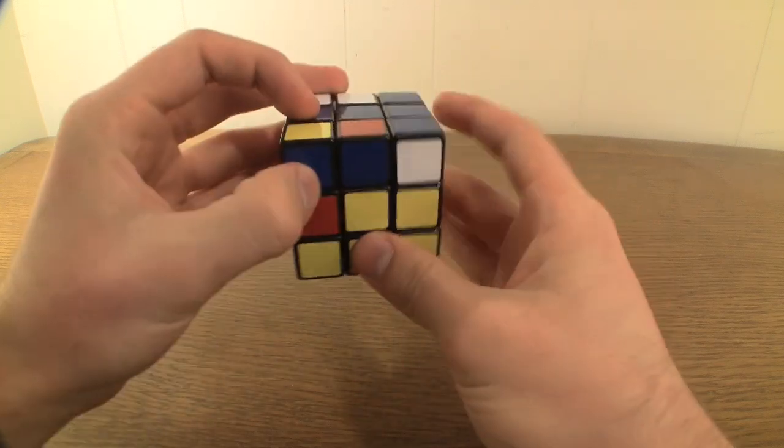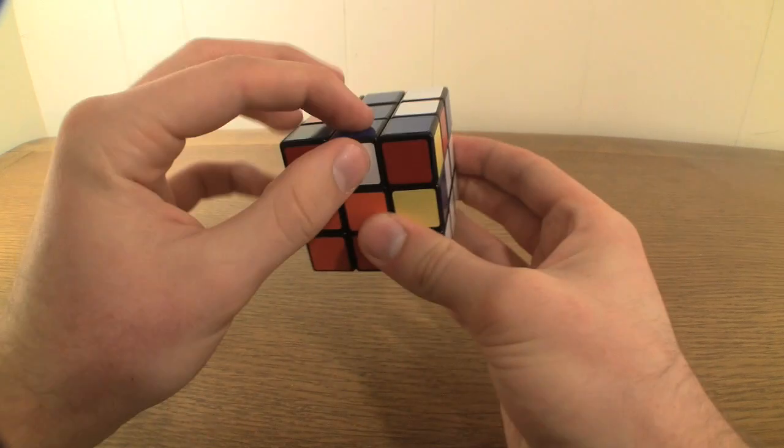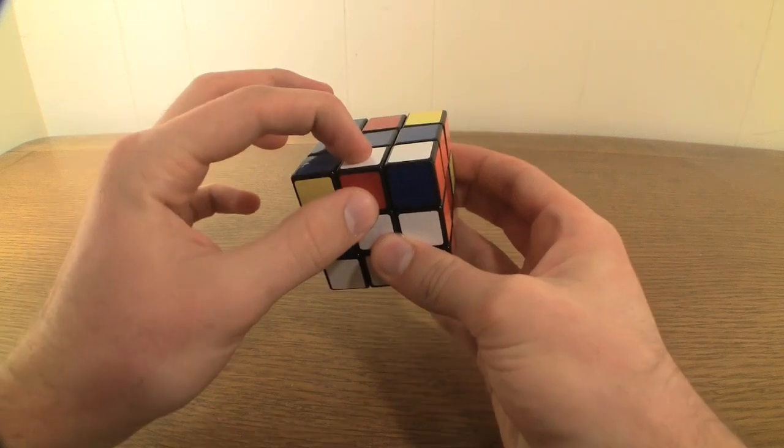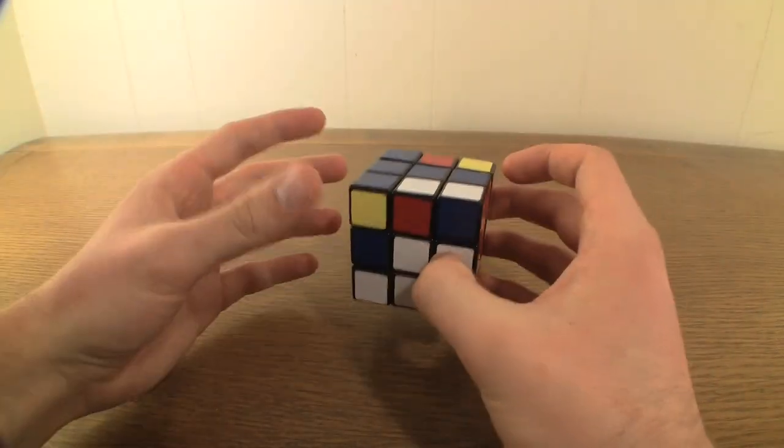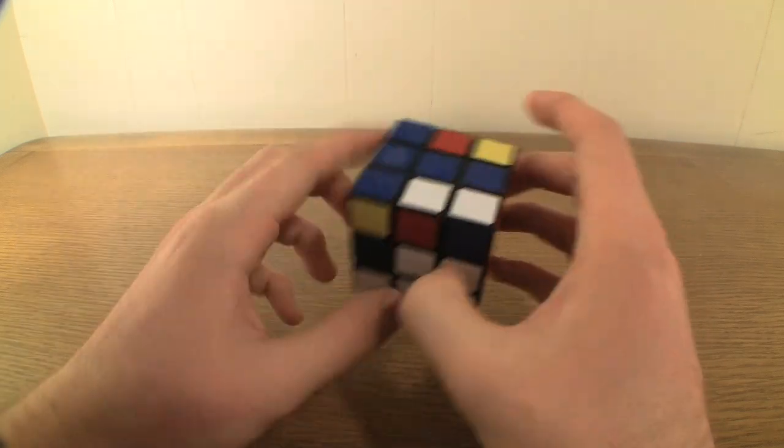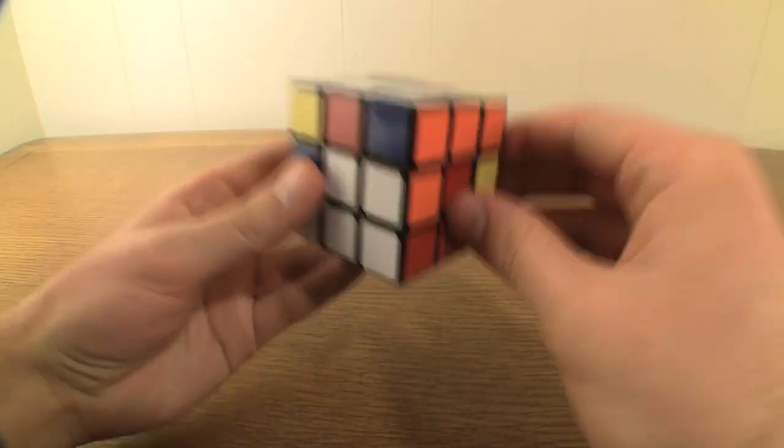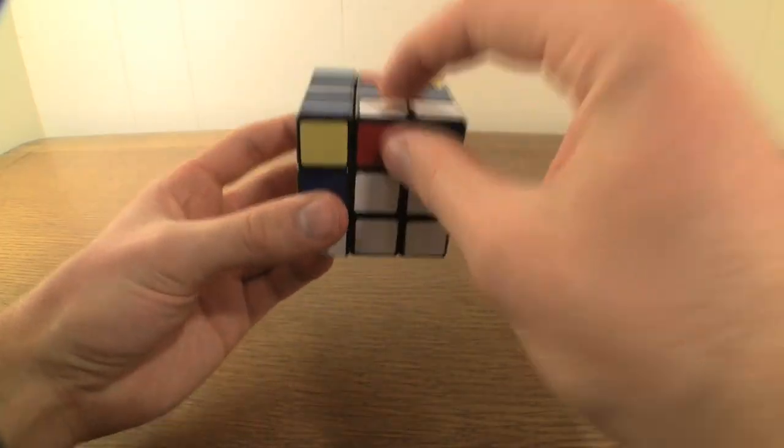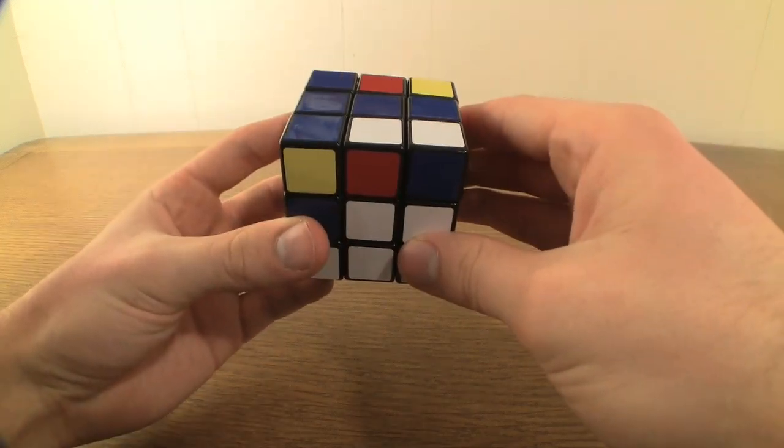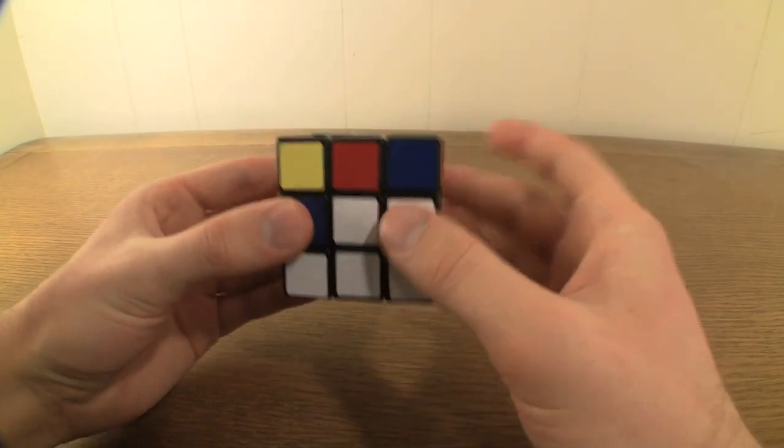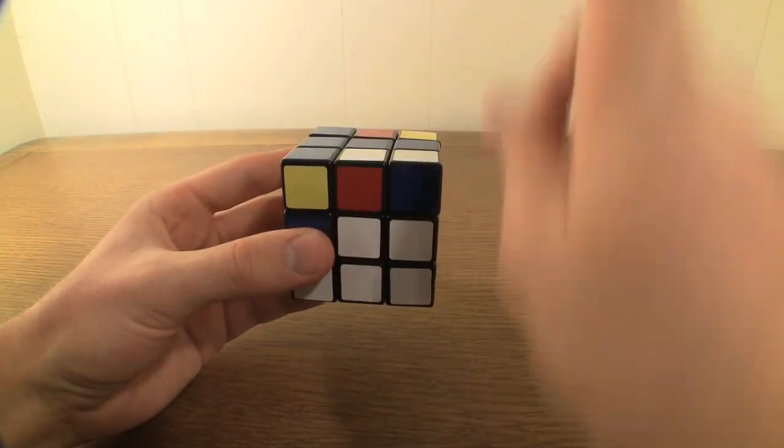Look at the four edge pieces in the top layer and find one without blue as one of its two colors. If all of your top layer edge pieces have blue in them, bear with us, we'll get to that in a second. Hold the cube so that the edge piece in question is in the top middle of the front face. One of its colors will be facing you, and its other color will be facing the sky.